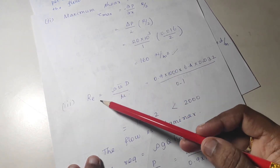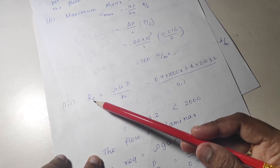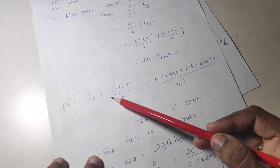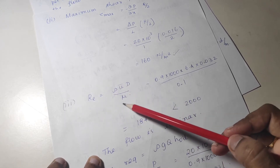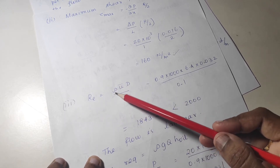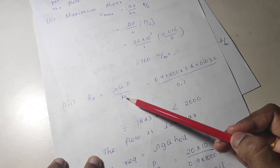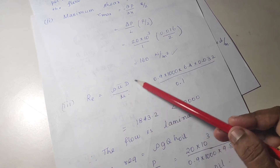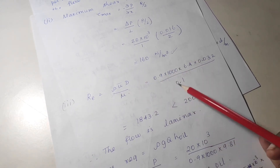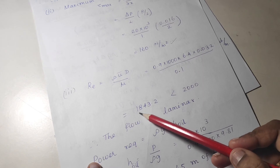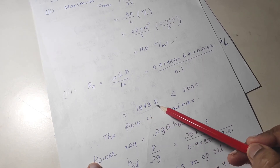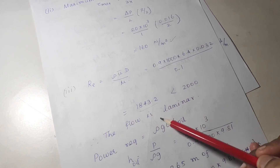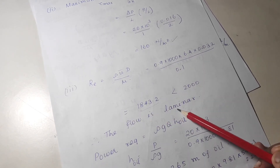For the type of flow, find the Reynolds number: RE equals density into velocity into diameter divided by mu. Substituting all values gives 1843.2, which is less than 2000, so the flow is laminar.